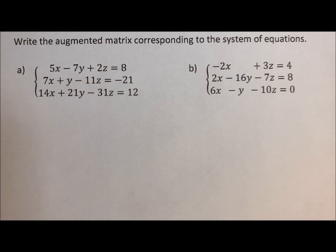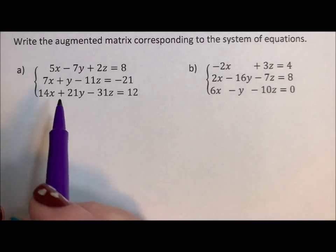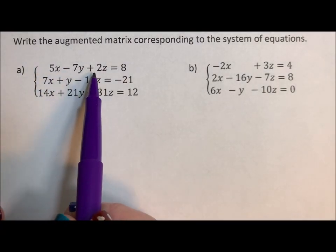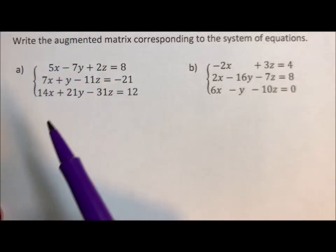We take out all of the other symbols associated with an equation. So we're going to take this first equation, 5x minus 7y plus 2z equals 8. Just write the numbers.